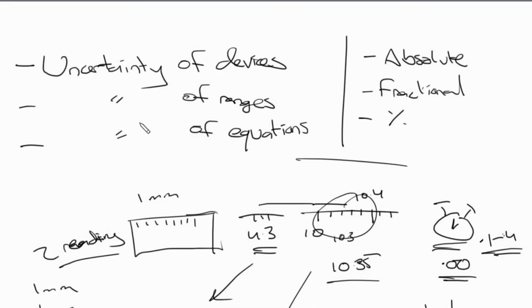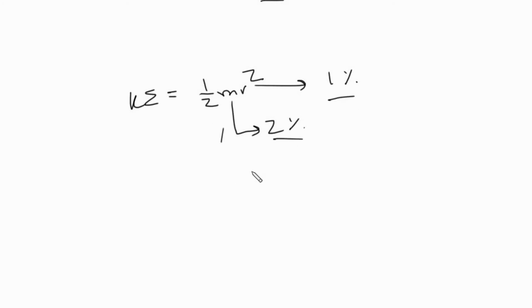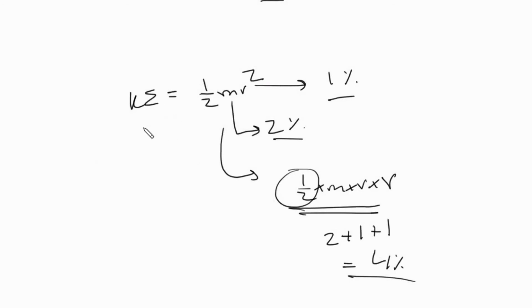The third method is finding uncertainties via equations, using percentage uncertainties. Take the equation kinetic energy = ½mv². If m has an uncertainty of 2% and v has an uncertainty of 1%, we can write it as ½ × m × v × v. Half is a constant so it has no uncertainty. m contributes 2%, plus v contributes 1%, plus v again contributes 1%. So the kinetic energy has an uncertainty of 4%. This is how you calculate uncertainties from equations - it extends into any equation you use.